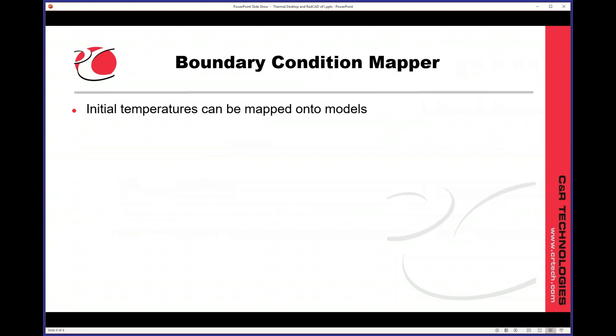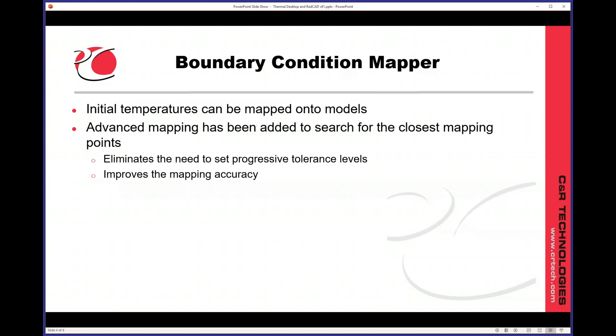With the boundary condition mapper, we've now added the option to set initial temperatures by mapping onto a model. Advanced mapping has been added to search for the closest mapping point. This eliminates the need to set progressive tolerance levels and will improve the mapping accuracy. We've had some great success with people who are having troubles with the boundary condition mapper, and then when we put this in, they were able to get very good results.